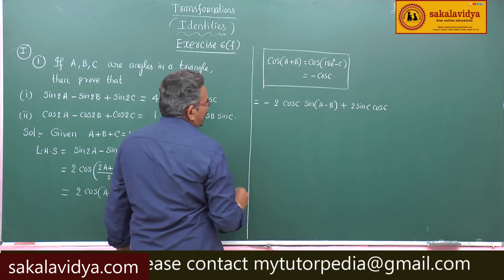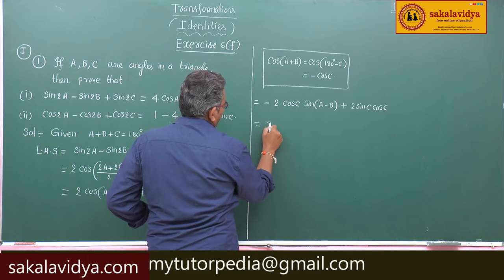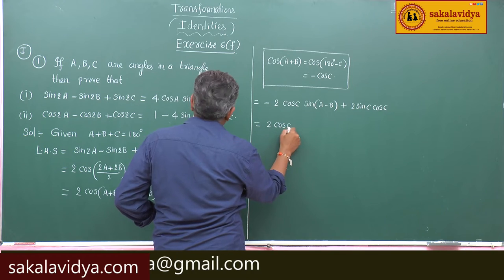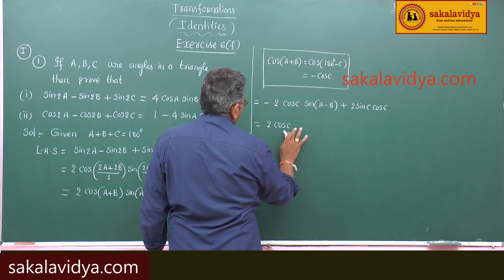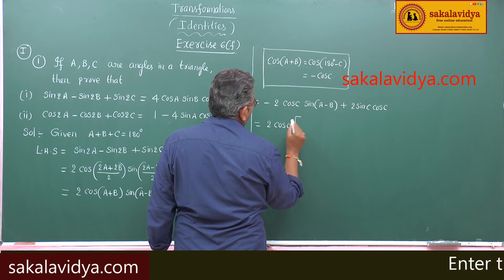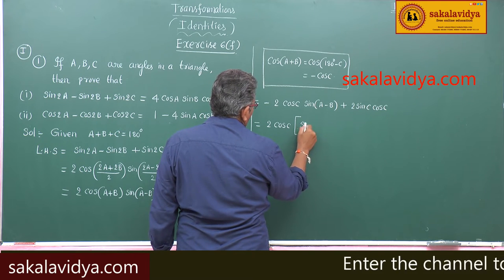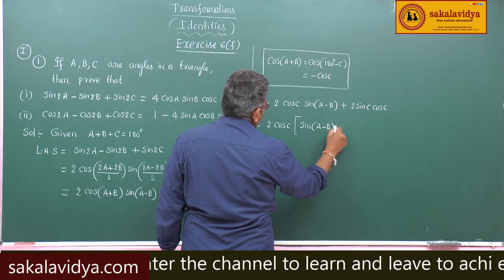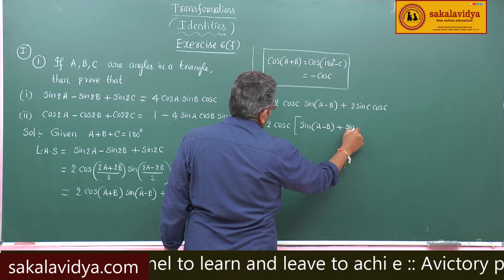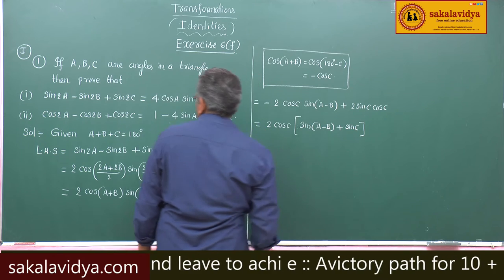Take 2 cos C common. If you take 2 cos C common, here we get sin of A minus B plus sin C.